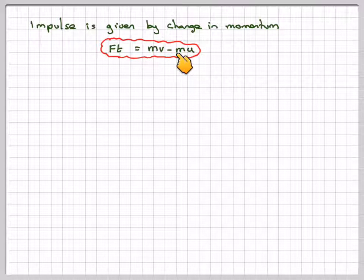To calculate the impulse, the impulse is given by the change in momentum, so that's given by Ft is equal to mV minus mu.